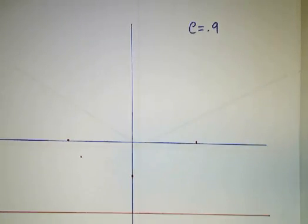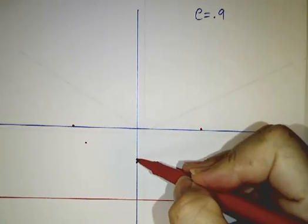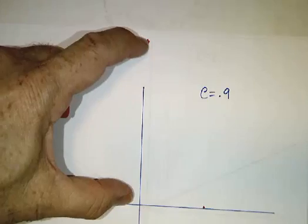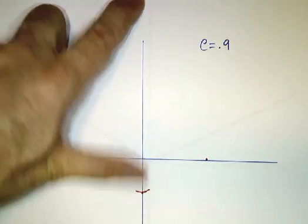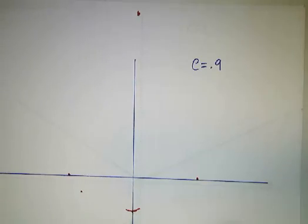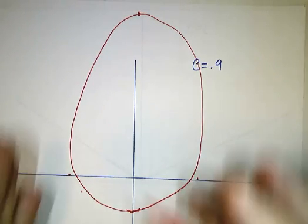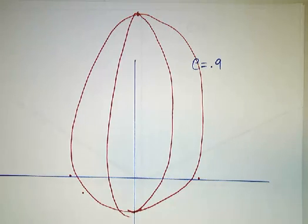With an eccentricity of 0.9, one way to have L be 9 tenths of D is to be almost at the halfway point between focus and directrix. The other way is to be way up here — if L is 9 and D is 10, then L is 9 tenths of D. So the upper part of the ellipse is way up there, and you wind up with an ellipse that's very long and skinny — very tall and skinny as the eccentricity gets close to 1.